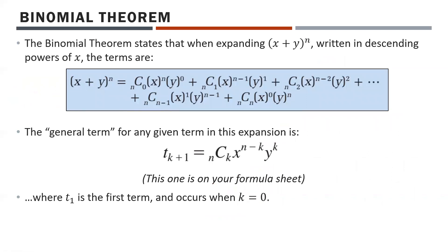Here's the binomial theorem. It states that when expanding x plus y to the power of n, written in descending powers of x, the terms are: nC0 · xⁿ · y⁰, plus nC1 · x^(n-1) · y¹, plus nC2 · x^(n-2) · y², and so on, all the way to nC(n-1) · x¹ · y^(n-1), plus nCn · y^n. Notice that the bottom number in each combination is always the power on y — we often call that k.